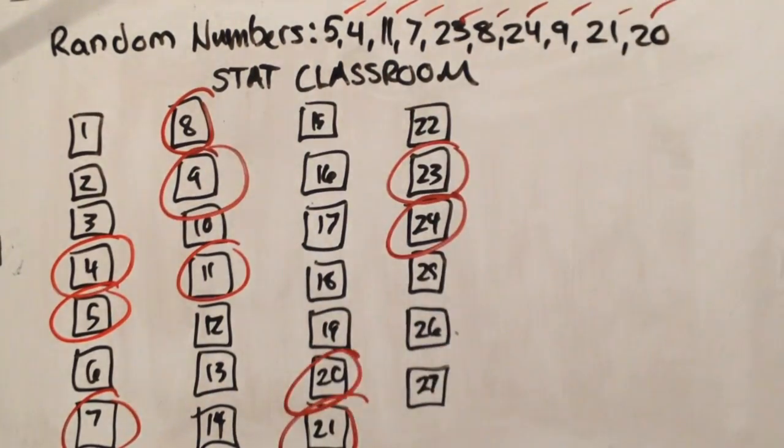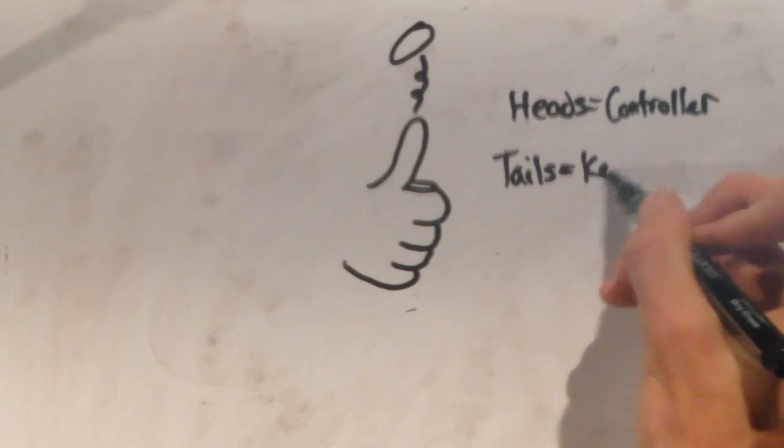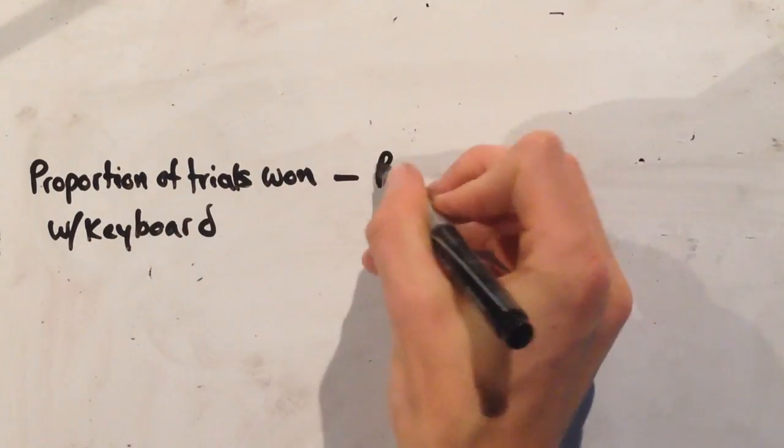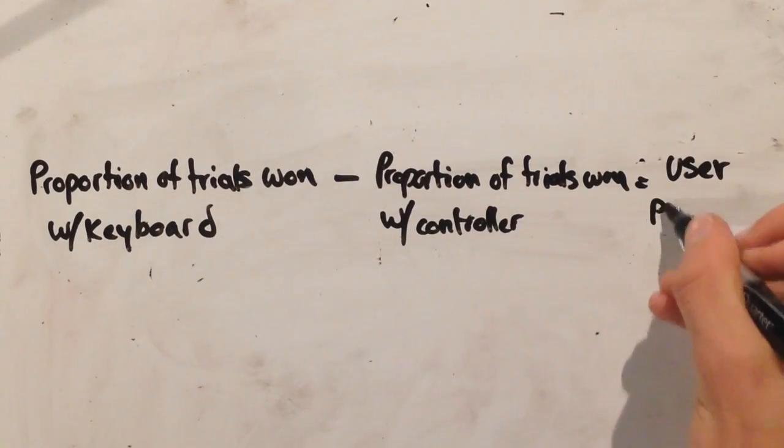We'll start by randomly assigning them to either a controller or a keyboard to use first in order to limit the bias of their progressing understanding of the game as they play. Then we will have them use the other controller in order to compare their ability with both of them. The difference in the proportions of goals scored for each controller will tell us which one is better for them.